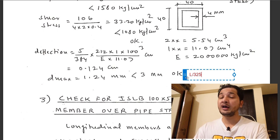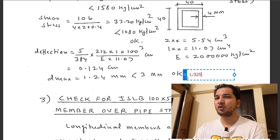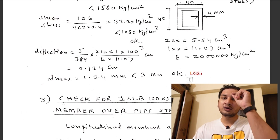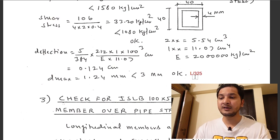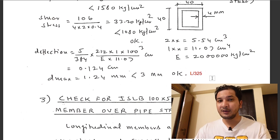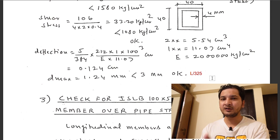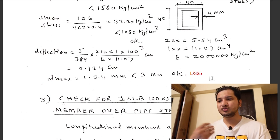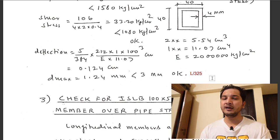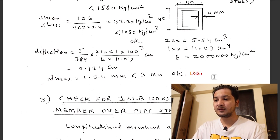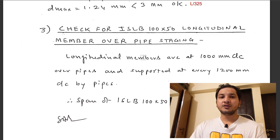We refer to IS 800:1984 (old code) because it uses the working stress method, which is more straightforward for temporary structures like formwork. The new IS 800:2007 uses the limit state method, which is more tedious for designing non-structural members. The maximum deflection limit from IS 800:1984 is L/325.